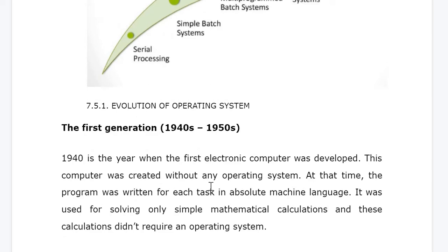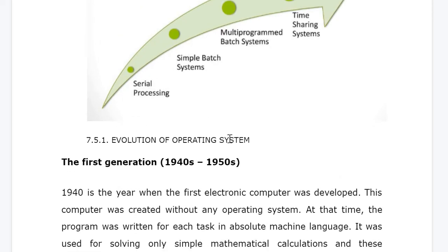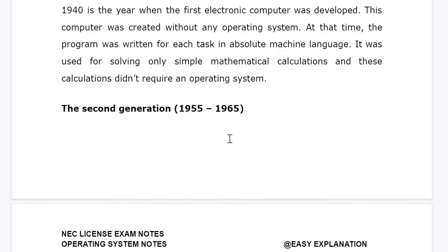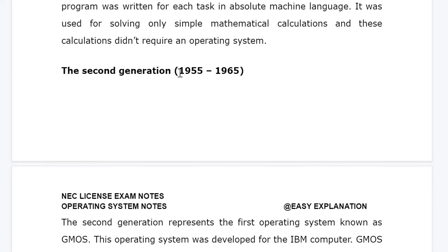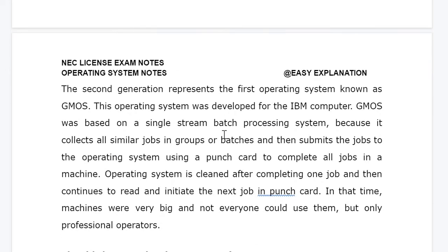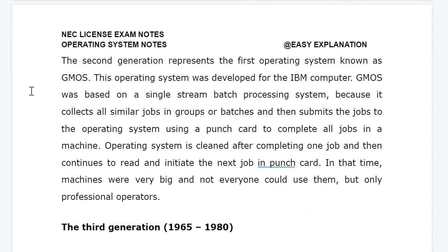The second generation is called simple batch system. It was between 1955 to 1965. The second generation represents the first operating system, known as GMOS, and this operating system was developed for IBM computers. So the first operating system belongs to the second generation and was developed for IBM computers.